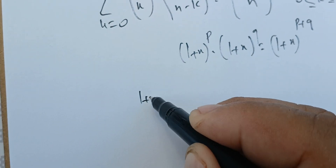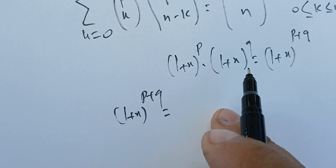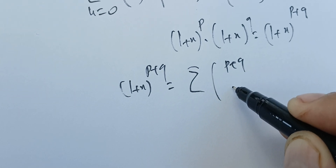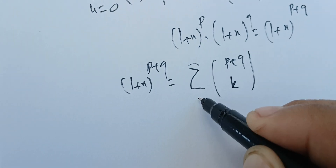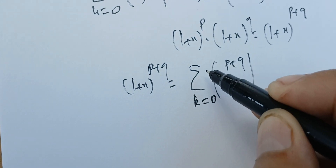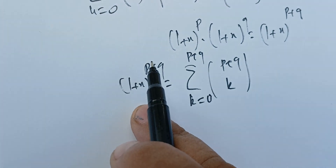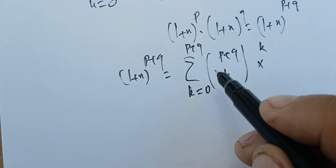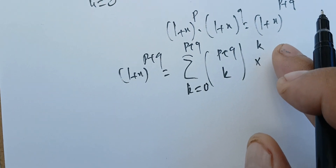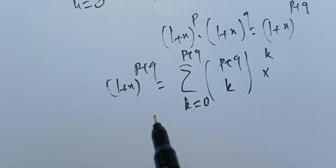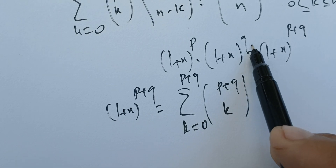Now we can apply the binomial theorem to (1+x)^(p+q). We get the sum over k from 0 to p+q of (p+q choose k) times x^k, taking a as x, so x to the power k, and 1 to the power (p+q−k) is just 1, so we don't need to worry about that.